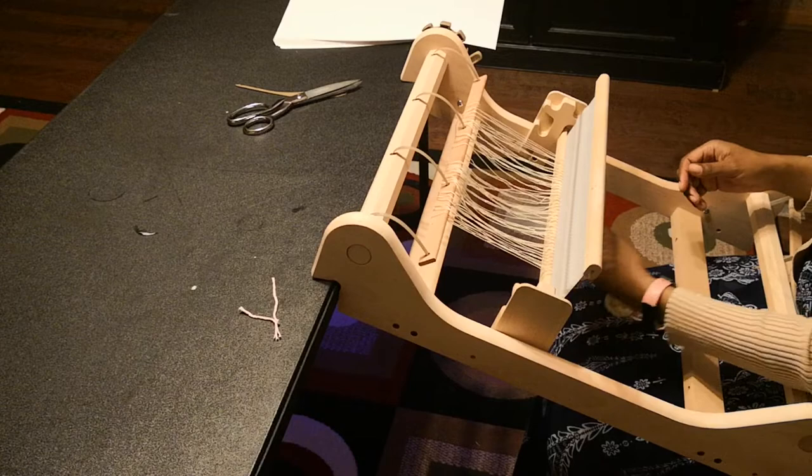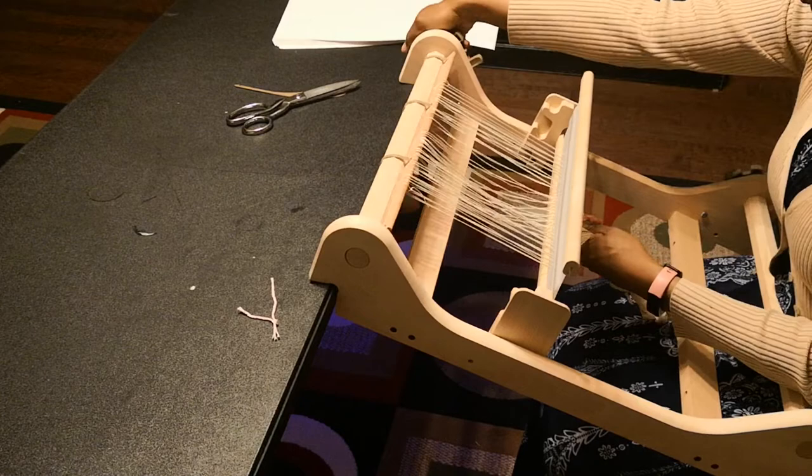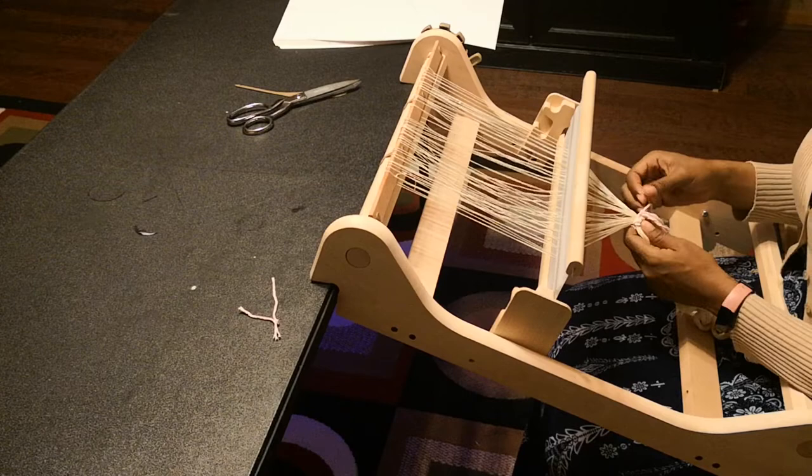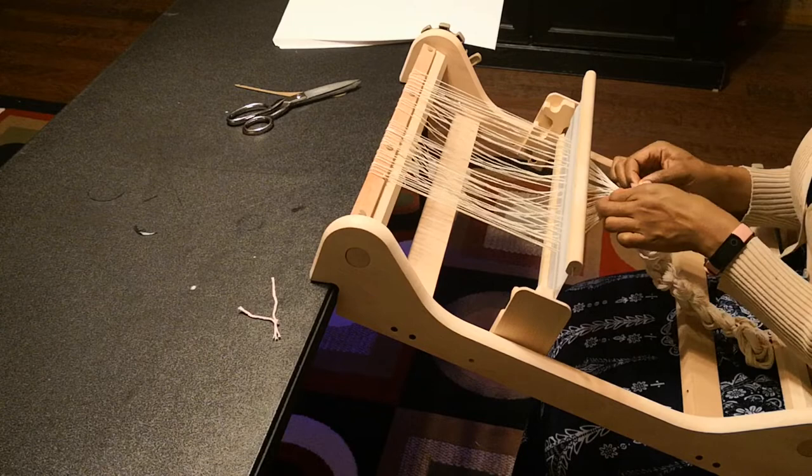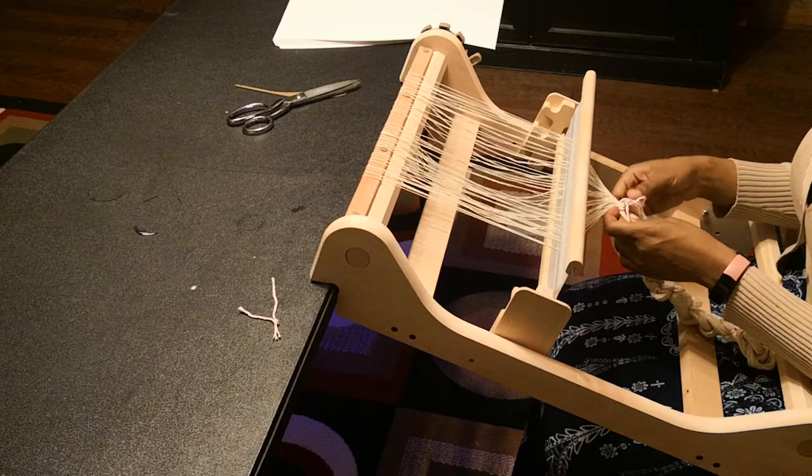What I'm going to start out by doing is beginning the process of winding the warp onto the back beam. I'm going to go ahead and unloose the knot that I had tied to keep my warp chain from coming undone, and I'm just going to untie this knot.